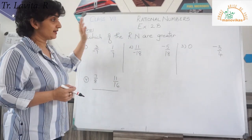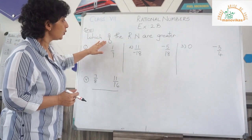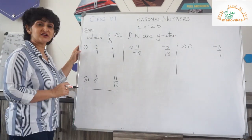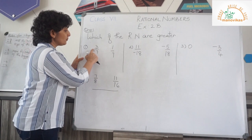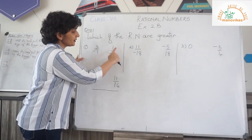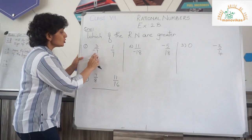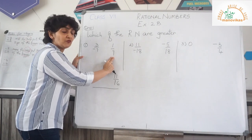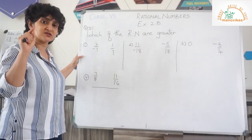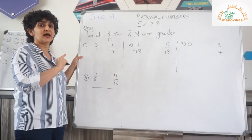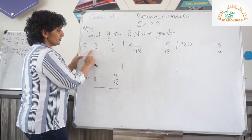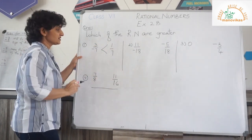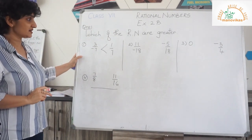Question 1 in exercise 2B is: which of the rational numbers is greater? Your first example: I have 3 upon minus 7 and I have 1 upon 7. There is a negative and a positive, and you know you have already studied in integers that a positive number is always greater than a negative number. This is negative, this is positive, so definitely 1 upon 7 is greater than 3 upon minus 7.